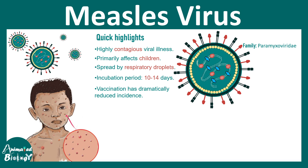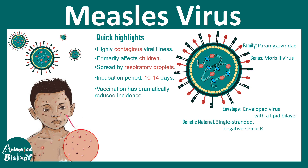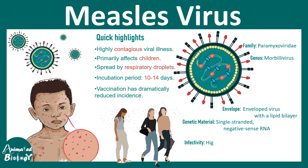The measles virus belongs to the Paramyxoviridae family and the genus Morbillivirus. It is an enveloped virus with a lipid bilayer, and its genetic material is single-stranded negative-sense RNA.